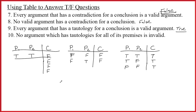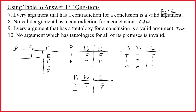Number ten: no argument that has tautologies for all of its premises is invalid. With premise one and premise two both tautologies — true, true — can we make this invalid? Yes, this is the easiest case. Make the conclusion false on any row. You could have a contradiction in the conclusion, which would make it a counterexample on every row, or a contingency with just one counterexample — but that's enough to make it invalid. So this sentence is definitely false.